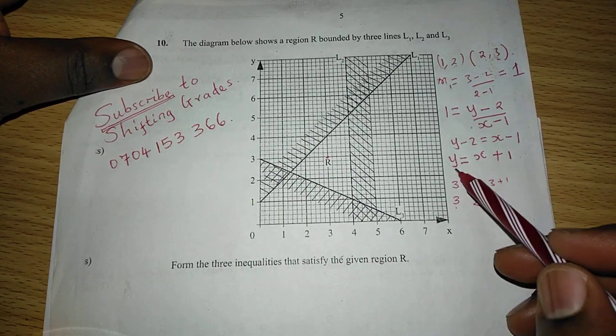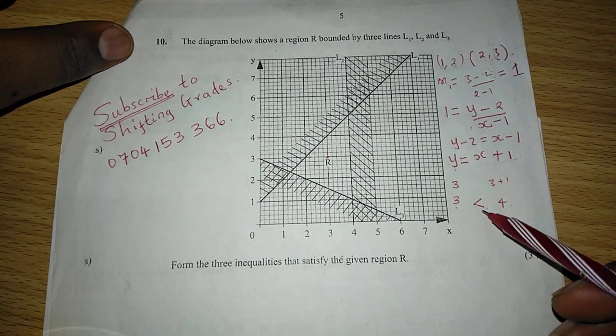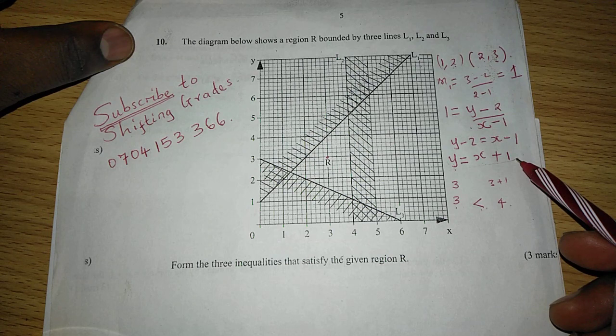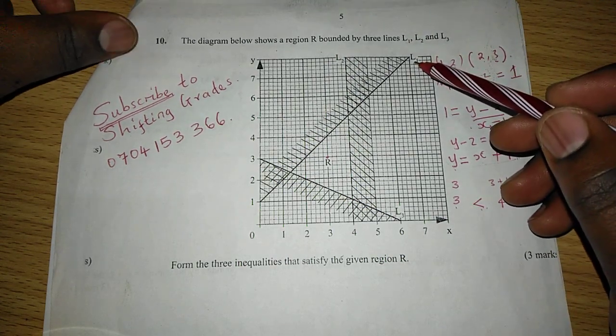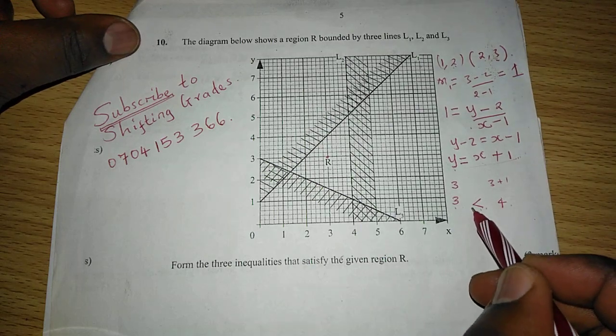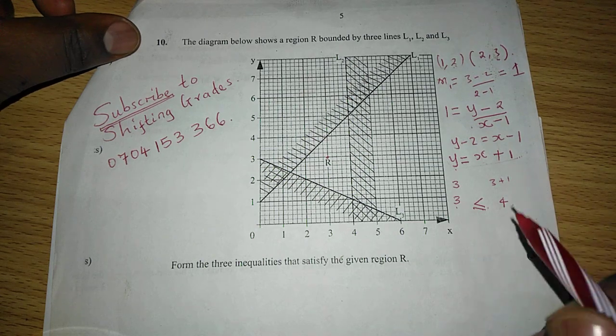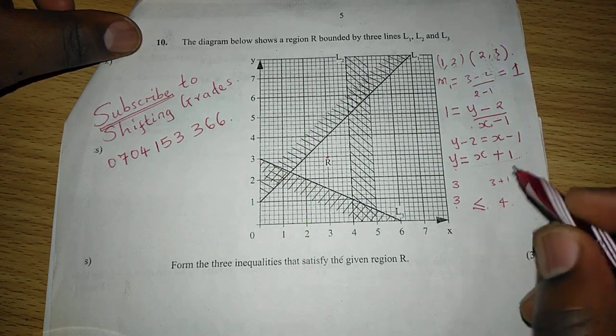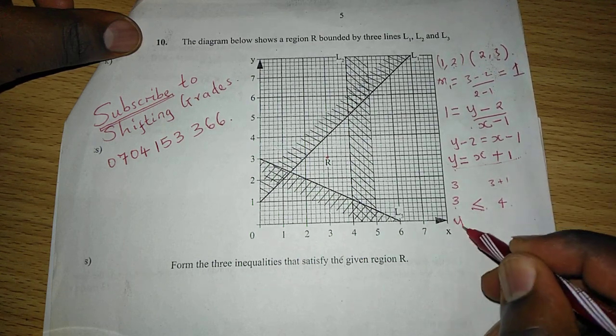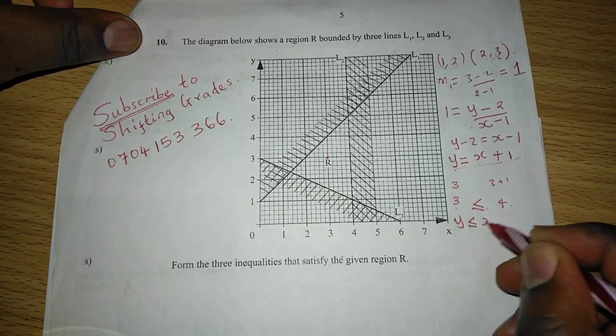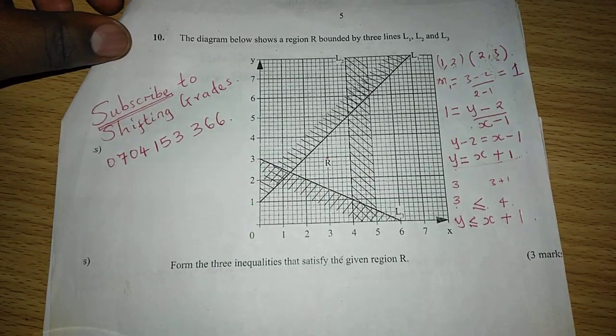Which means for this line, it is Y is less than this other side. And now that it is a complete line, then we include this symbol such that it is less than or equal to, since the line is complete. Therefore, the inequality will be Y less than or equal to X plus 1. So that is the first inequality.